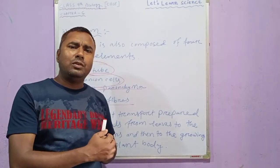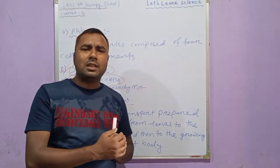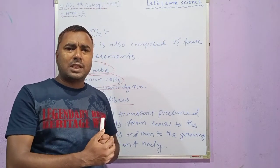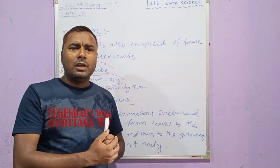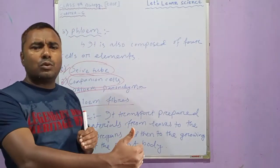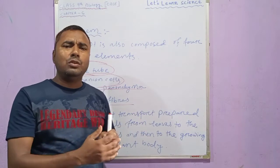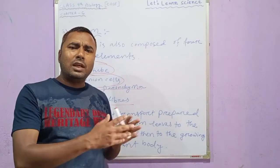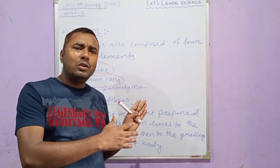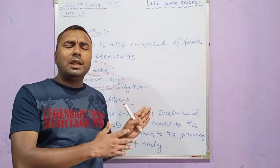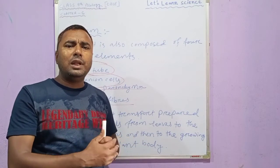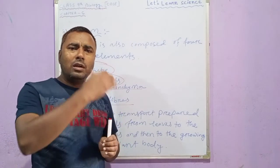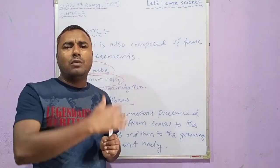Xylem is made up of four cells: tracheids, vessels, xylem fibers, and xylem parenchyma. We learnt about the function of xylem, which is to transport water and mineral salts. Xylem is mainly responsible for transporting water and mineral salts from the root to the shoot of the plant.